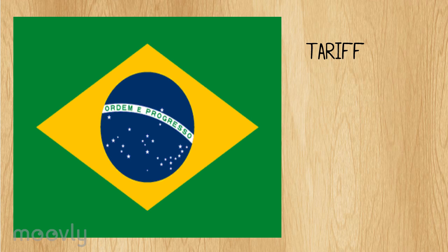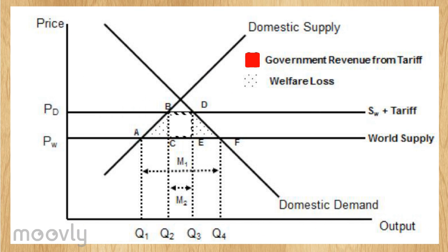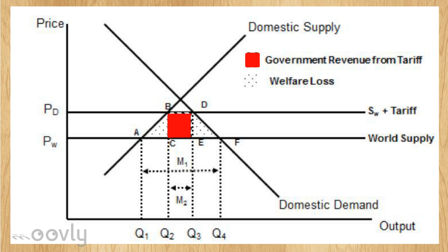Just to clarify, a tariff is a tax charged on imported goods. As one can see in the graph, this is a policy to aid domestic production. Domestic production increases to Q2, while the foreign producers supply the rest, which is Q2 to Q3. Even though they receive price D, they pay off the tariff to the government, thus leading to an increase in government revenue. Brazil would benefit in the form of tax revenue by imposing taxes on imports.